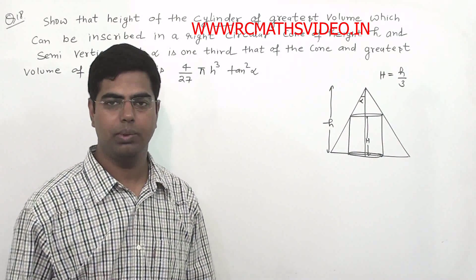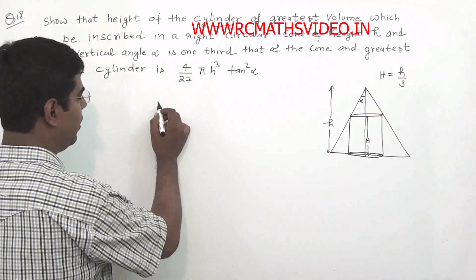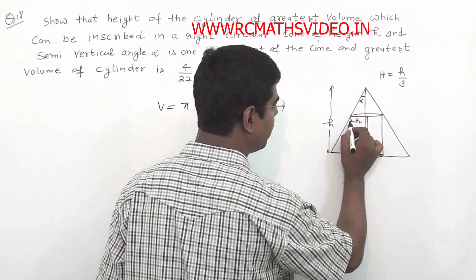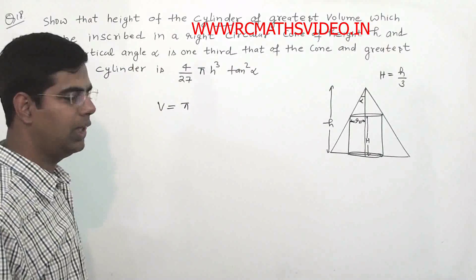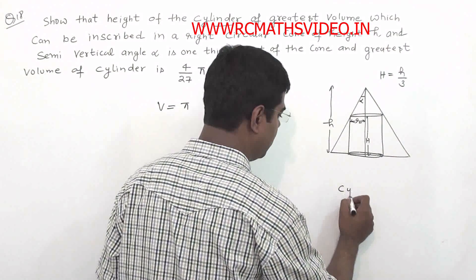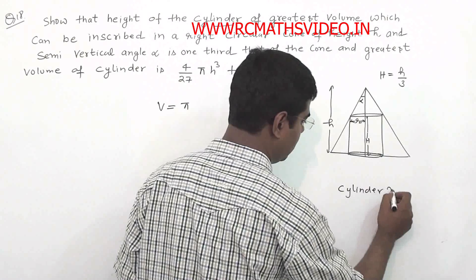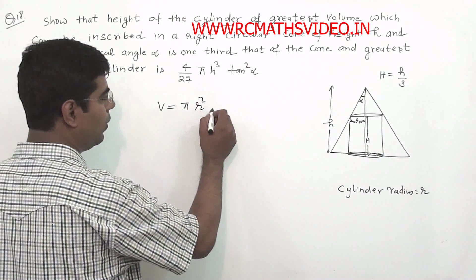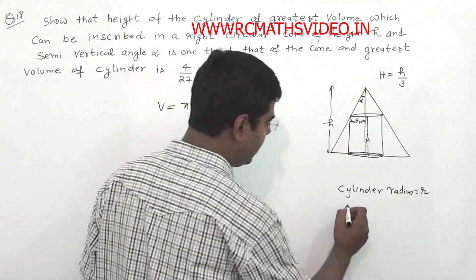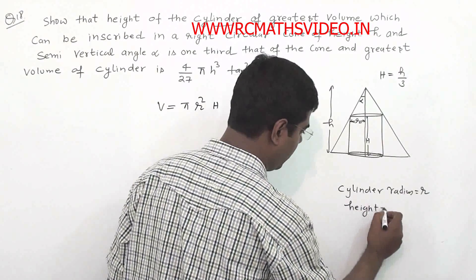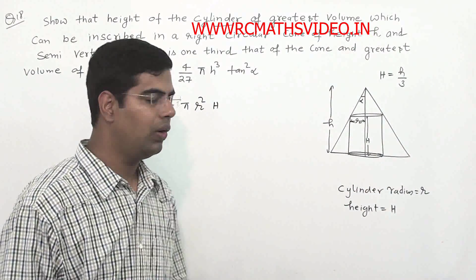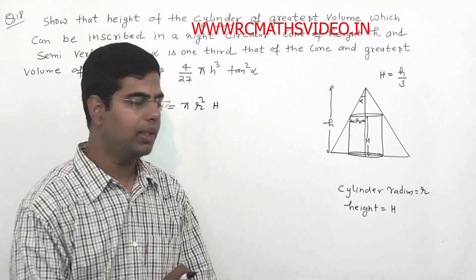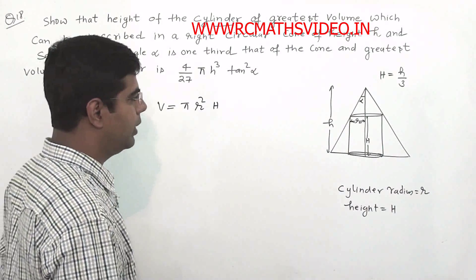Volume of the cylinder is V = π r² H, where r is the radius of the cylinder and H is its height. Here r and H are the variables, and we will use geometry to relate them. Let's use the geometry of the cone.